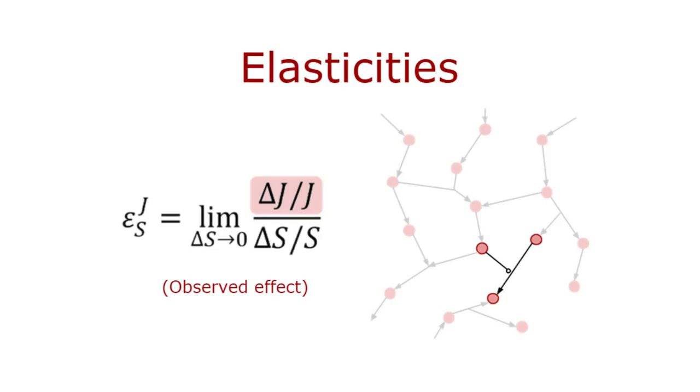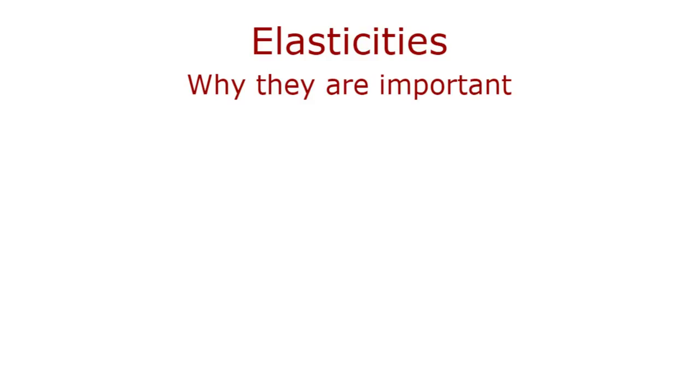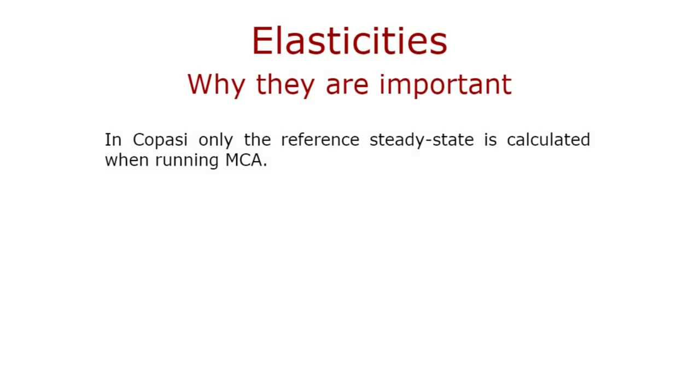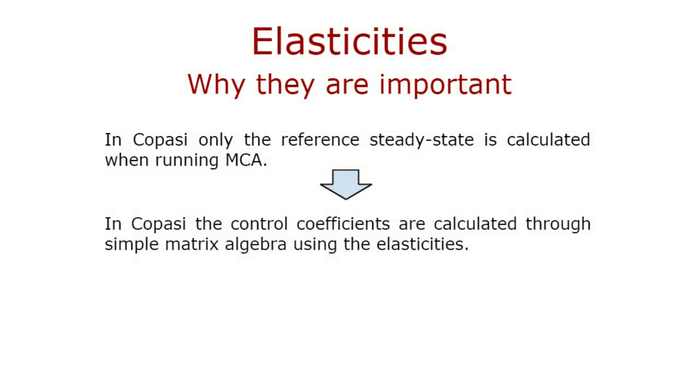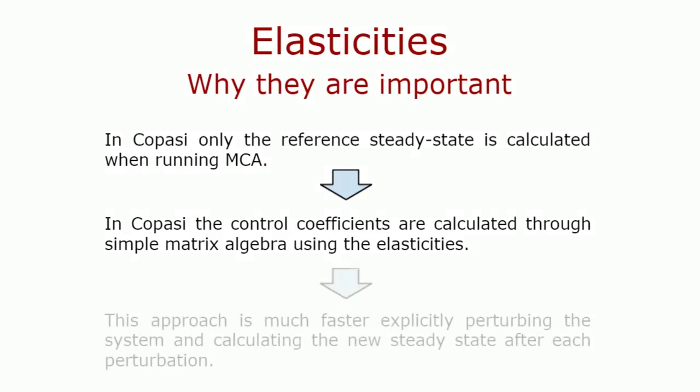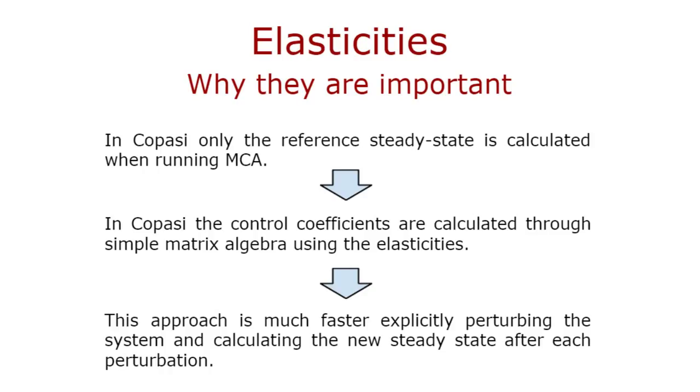So, how do the elasticities come into the picture? In COPASI, the control coefficients are not determined by actually perturbing the enzyme activity and recalculating the steady state. Only the reference steady state is retrieved, while the control coefficients are calculated through the stoichiometry matrix and the elasticities using simple matrix algebra. This makes the calculation much faster than explicitly perturbing the system and rerunning a steady state analysis after each perturbation. This is the main reason why elasticities are important in MCA, because they allow us to calculate the control coefficients by analytical means. If you are interested in the maths used to calculate the control coefficients from the stoichiometry matrix and the Jacobian, you can refer to these two papers.